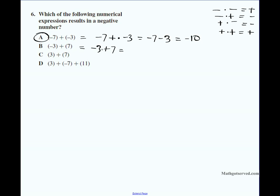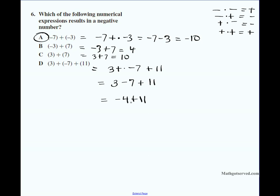Let's verify the remaining options. Option B: minus three plus seven — signs are different, so subtract: seven minus three is four, keep the sign of the bigger number (seven), so the result is positive four. Option C: both positives, so three plus seven is positive ten. Option D: three plus (negative seven) plus eleven — positive times negative gives minus seven plus eleven. From left to right: three minus seven is negative four; negative four plus eleven — signs differ, eleven minus four is seven, keep the plus — positive seven. So options B, C, and D are all positive. Answer is option A.